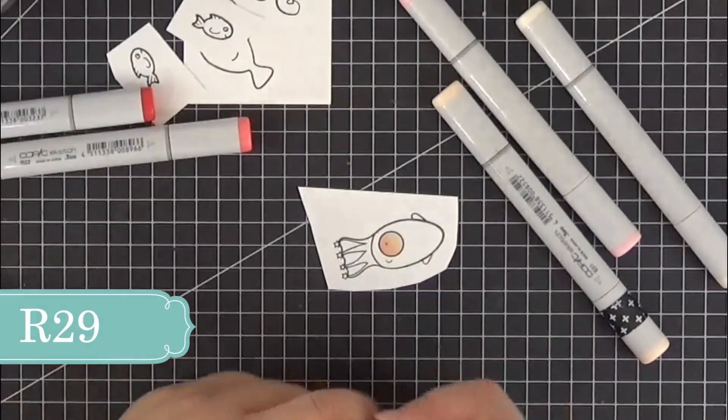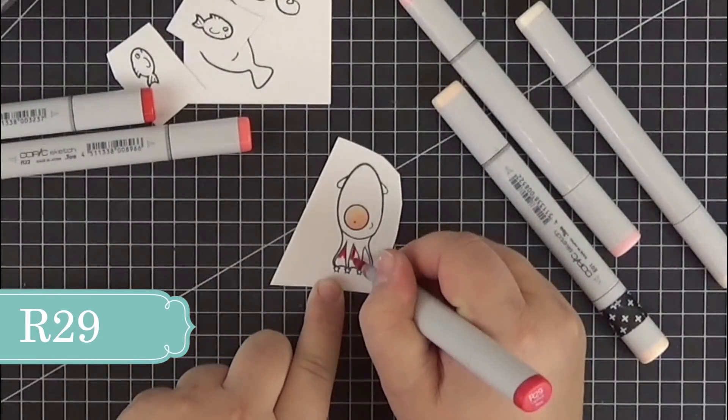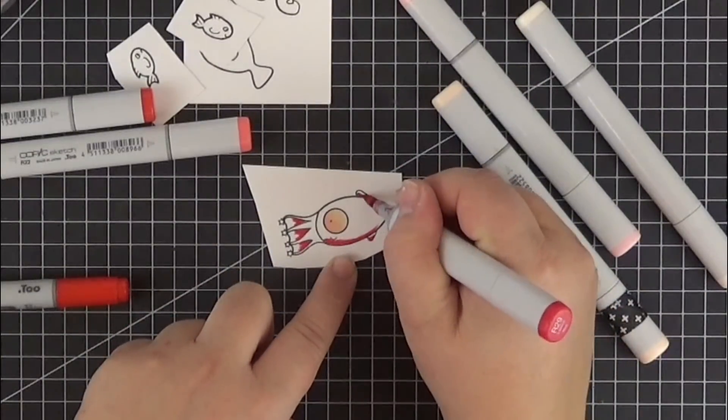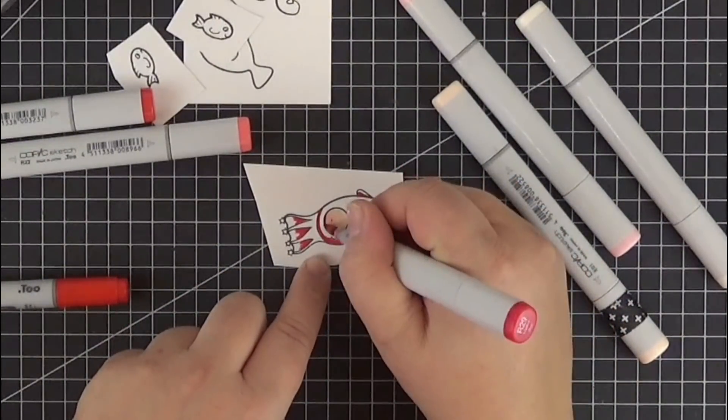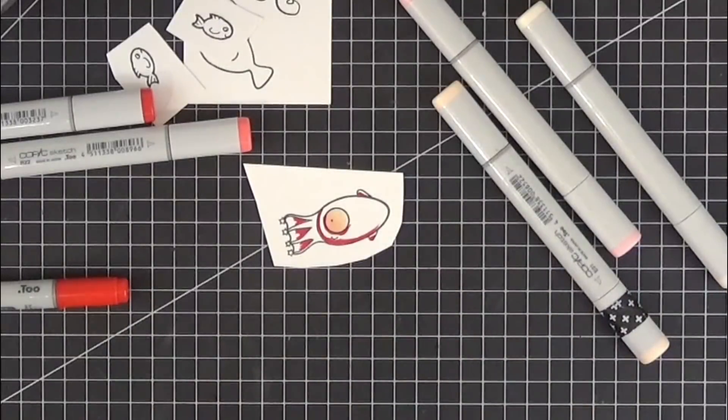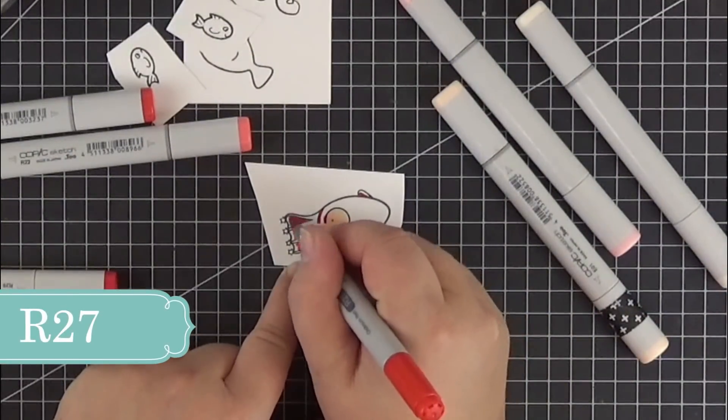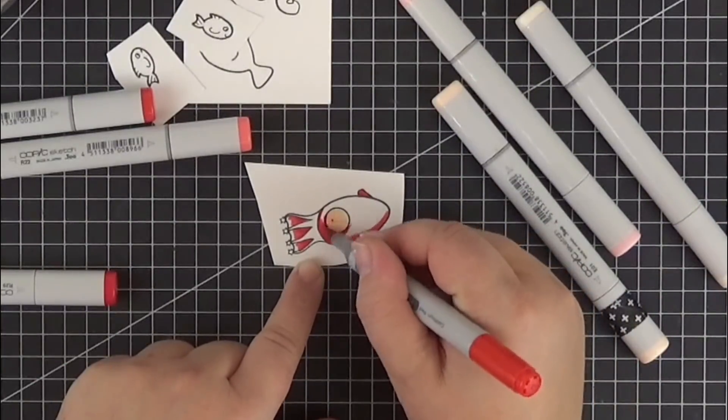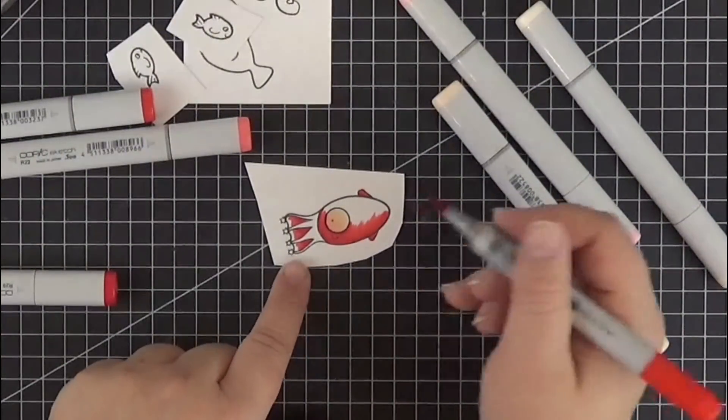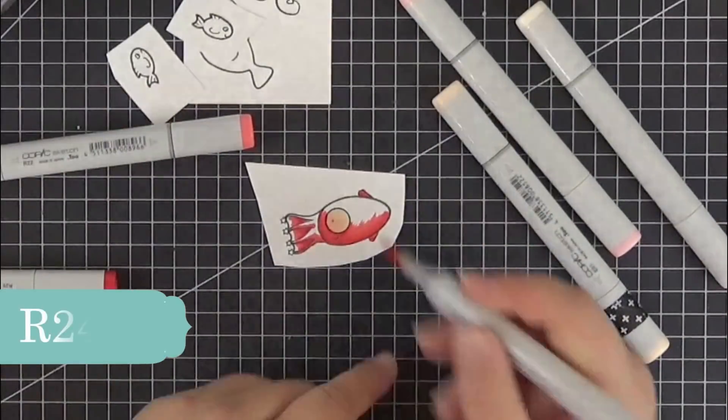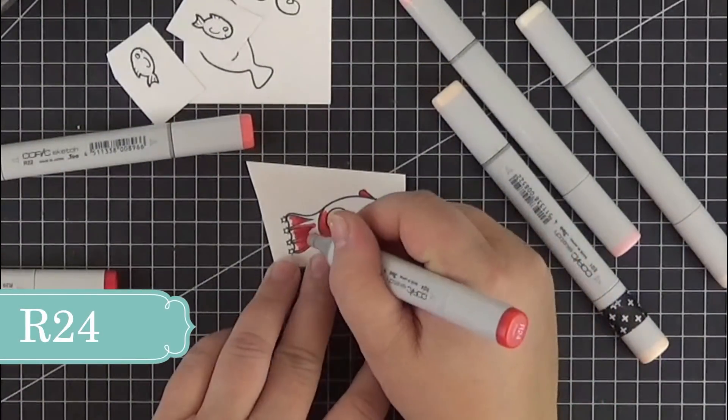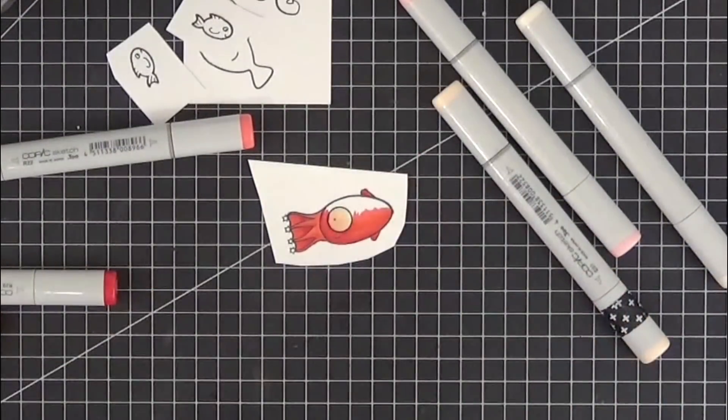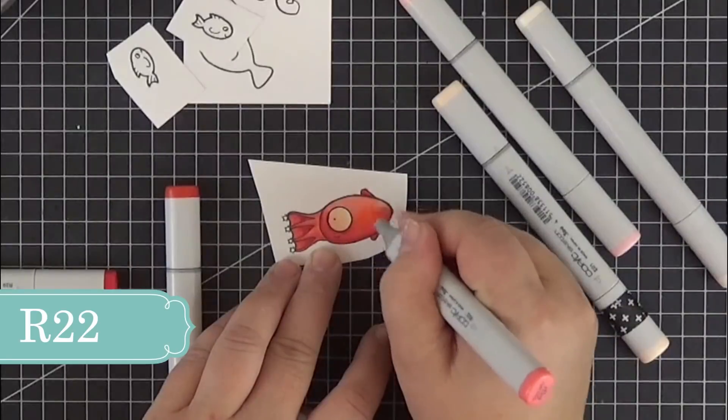Next I chose R29 for the darkest part of the body. In an underwater scene, that's usually the belly and some areas like behind the eye. My next darkest color is R27 and I'm just overlapping a little bit to create a smooth transition. Then I used a little bit of R24 and finally R22 for the highlights.